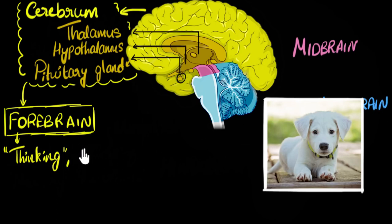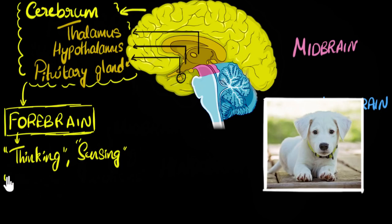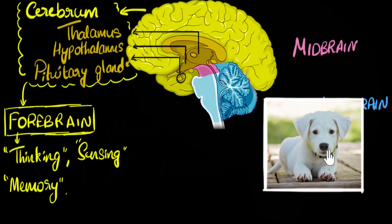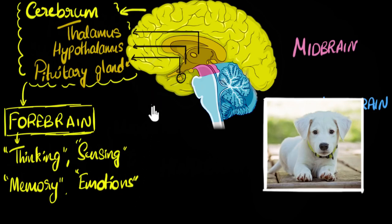Another function: you identified this picture — it's a puppy. You didn't confuse it with a donkey or tiger. The reason you can remember it's a puppy is because of your memory — you know what puppies look like and you can associate with it. So memory and learning also come from your forebrain. When you look at this puppy, some kind of emotion comes in — you may feel 'aw, what a cute puppy,' happy. All the emotions come from your forebrain, including love. Love does not come from the heart — it comes from your forebrain.